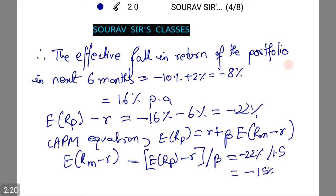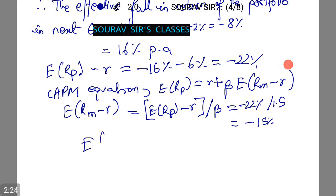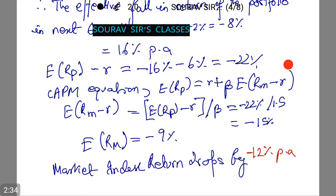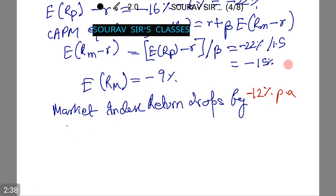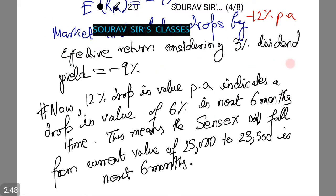This means E(R_M) minus R equals minus 9%, or the market index return drops by minus 12% per annum. The effective return considering the 3% dividend yield equals minus 9%. A 12% drop in value per annum indicates a drop of 6% in the next six months, meaning the Sensex will fall from a current value of 25,000 to 23,500 in the next six months.